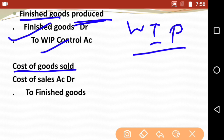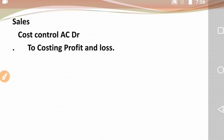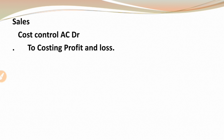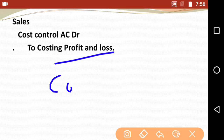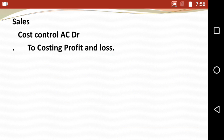Next is cost of goods sold, which we call COGS. The COGS entry is: cost of sales account debit to finished goods control account. The last entry is sales. For sales, the entry is: cost control account debit to costing profit and loss. Some people write cost of sales here — that is also right. It is better to write cost control account debit to costing P&L, and then transfer cost of sales from costing P&L.